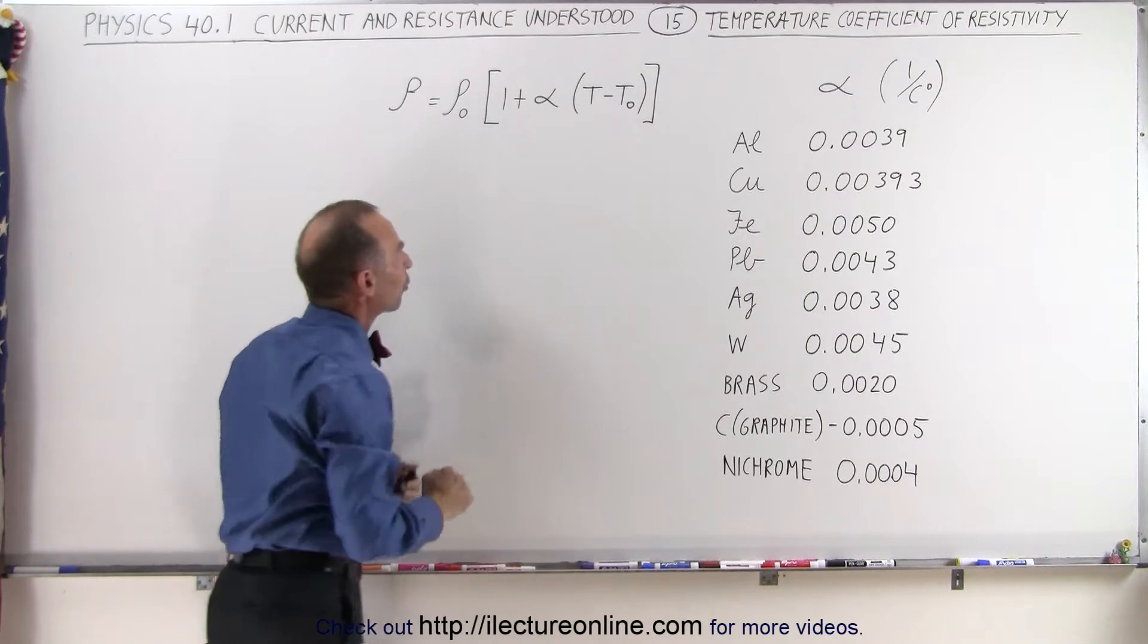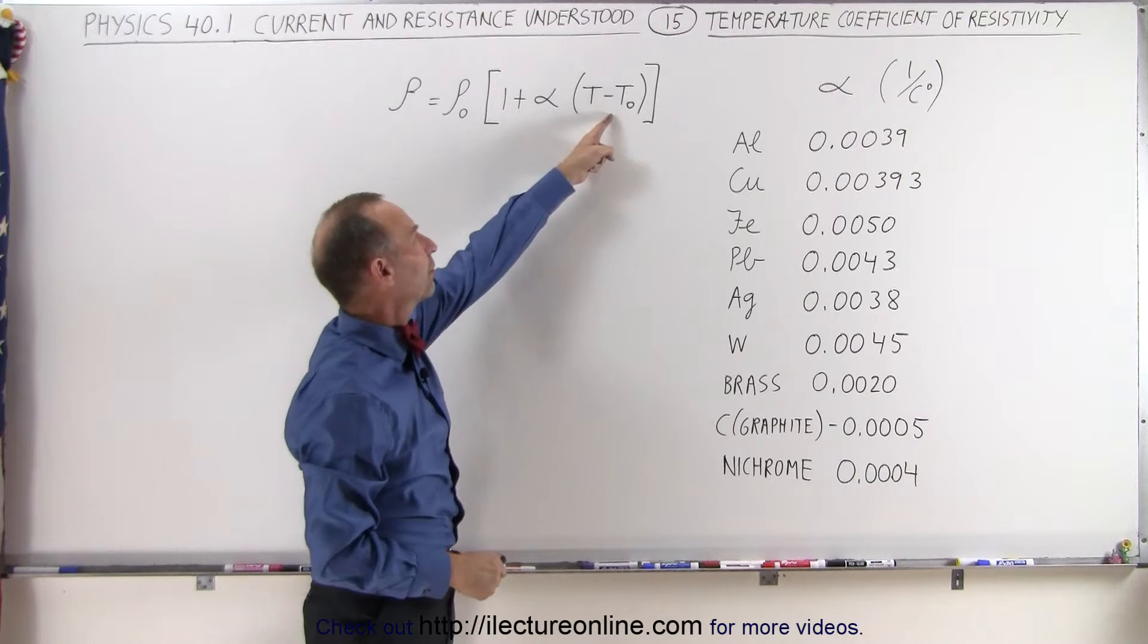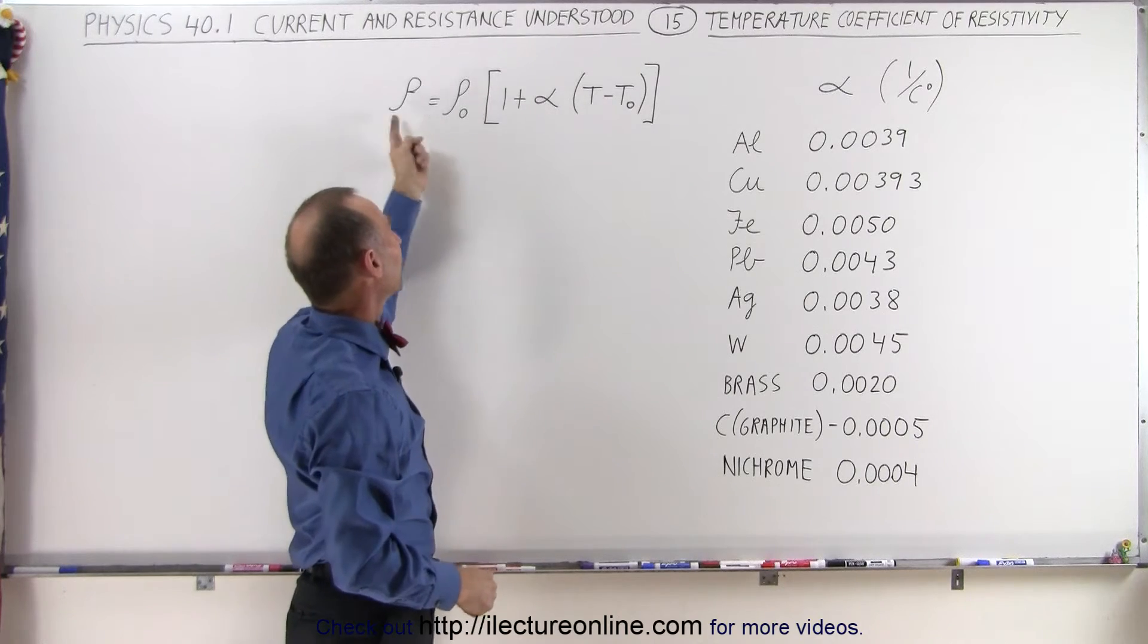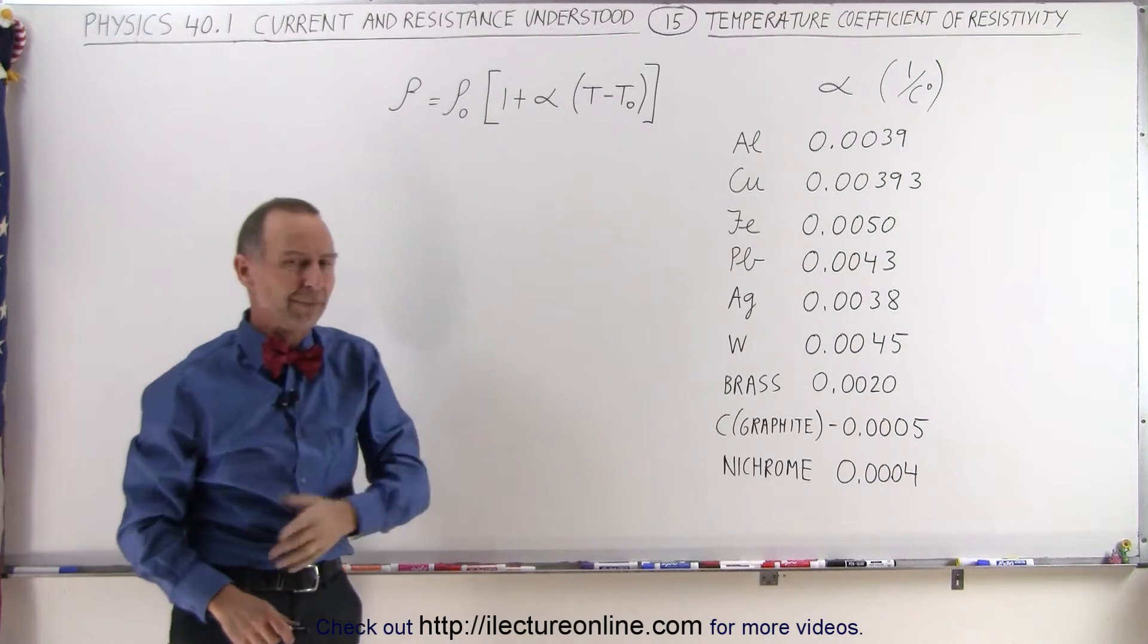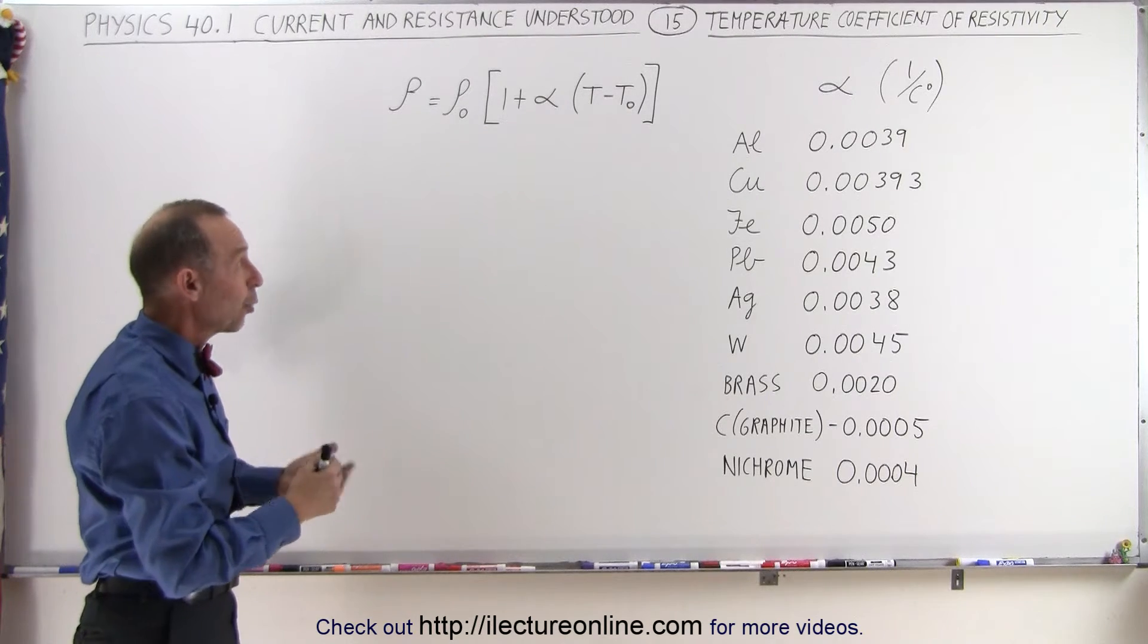In other words, if temperature increases the resistivity increases, and so this is the equation we use to calculate that. Here is the temperature coefficient of resistivity that we then multiply times the change in temperature, add to one, and that will give us the new resistivity. As we saw in the previous video, for large changes in temperature that can be quite a bit.